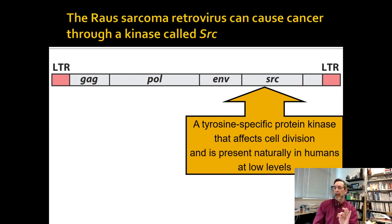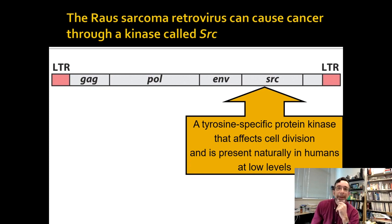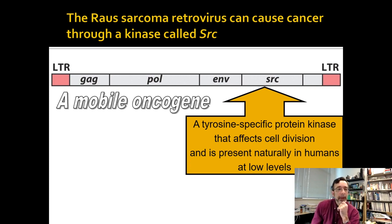Thankfully, this is pretty rare and you also have defenses against it. This is scary, but it's something that's been going on for billions of years. While it's scary, it's also something that is natural. It really is a mobile oncogene — it's just not that mobile, and the virus has a hard time getting to a place where it really causes problems.